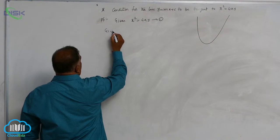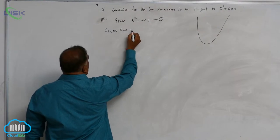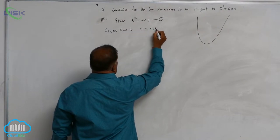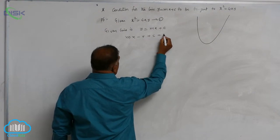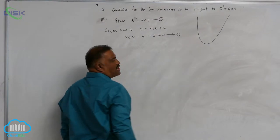Now given line is y is equal to mx plus c, or you can rewrite it as mx minus y plus c is equal to 0, call it equation 2.